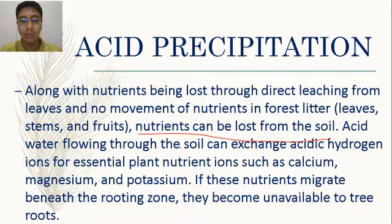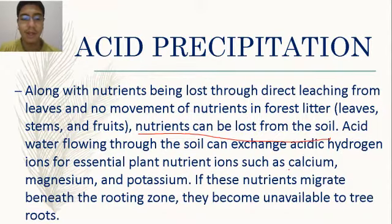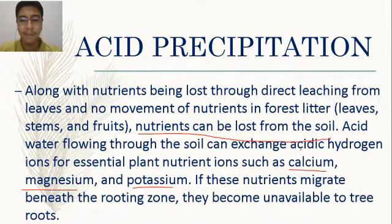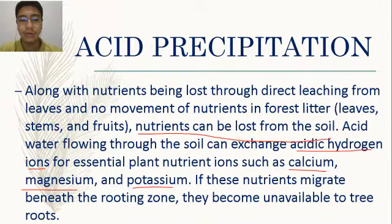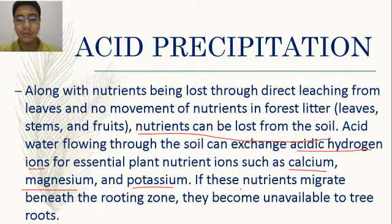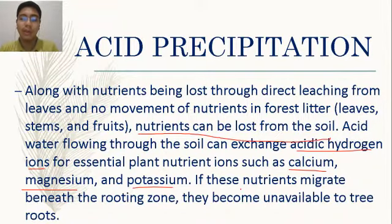Acid water flowing through the soil exchanges acidic hydrogen ions for essential tree nutrients such as calcium, magnesium, and potassium. If these nutrients migrate beneath the rooting zone, they become unavailable to tree roots, leaving trees without the nutrients they need.